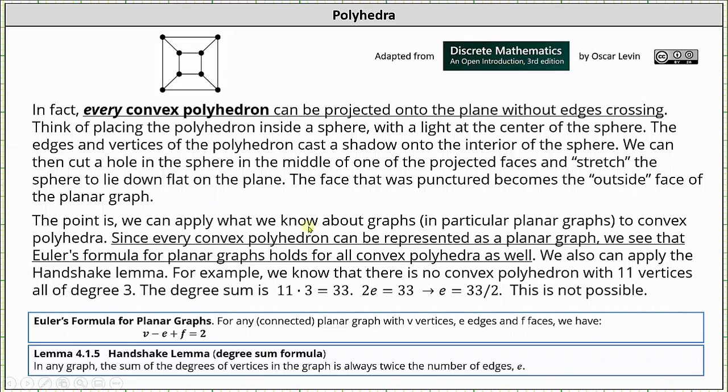The point is we can apply what we know about graphs, in particular planar graphs, to convex polyhedra. Since every convex polyhedron can be expressed as a planar graph, we see that Euler's formula for planar graphs holds true for all convex polyhedra as well. We can also apply the handshake lemma.